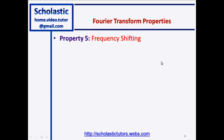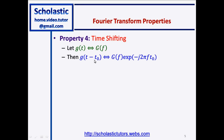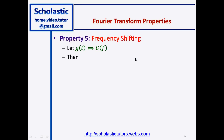Property number five: frequency shifting. We have g(t) and G(f). The function g(t) multiplied by the exponential e^(j2πfc·t) will become a frequency-shifted function G(f - fc). Note the sign difference: when there is a shift in the time domain by t0, there is a negative sign in the exponent, whereas here you get a positive sign in the exponent and fc gives G(f - fc).